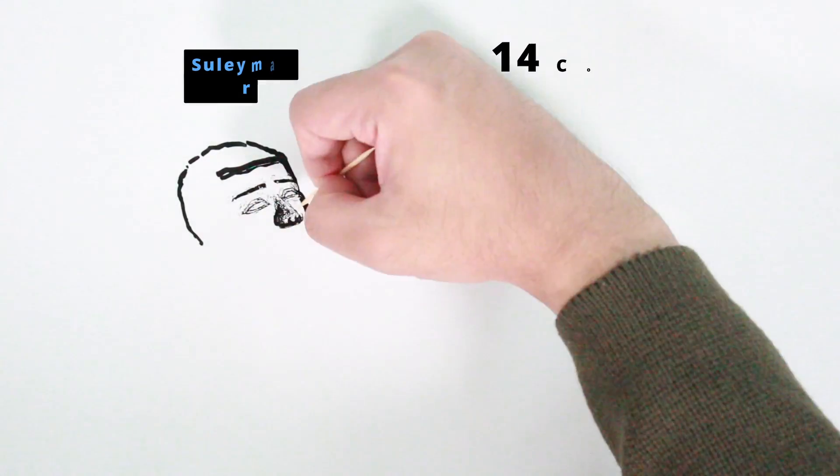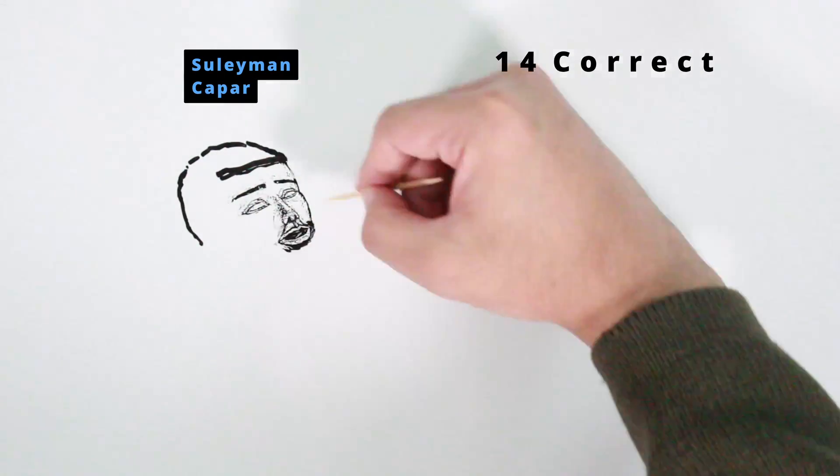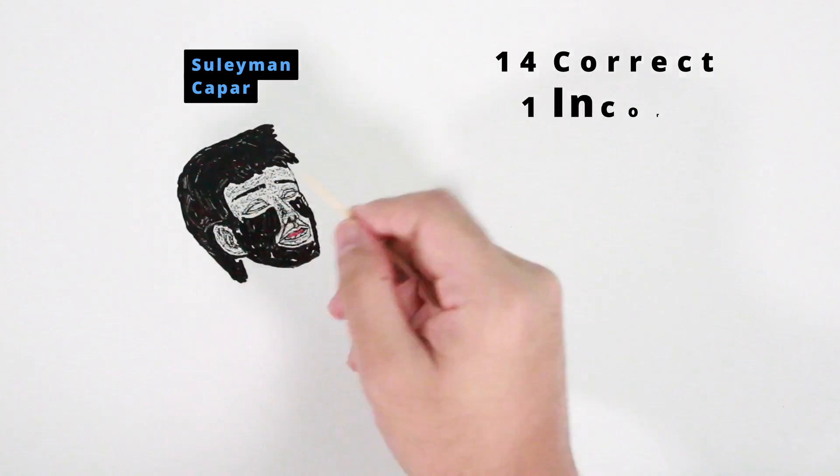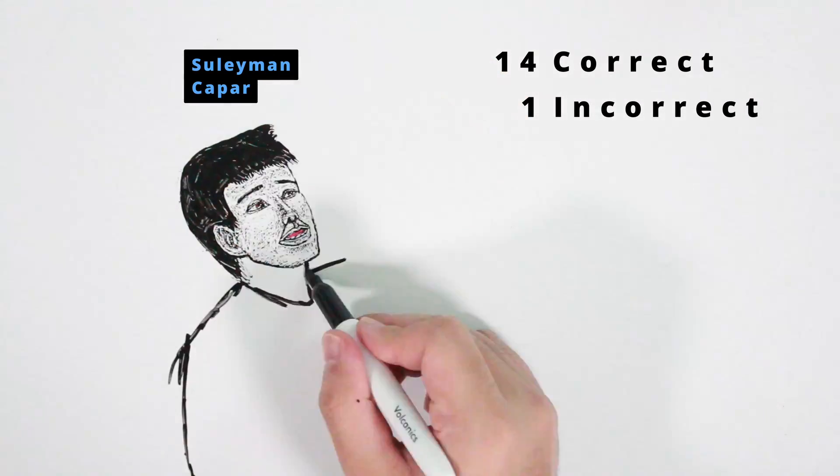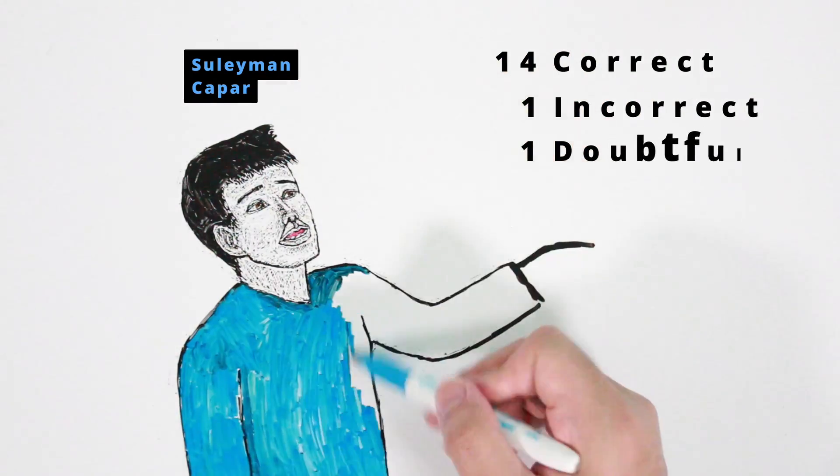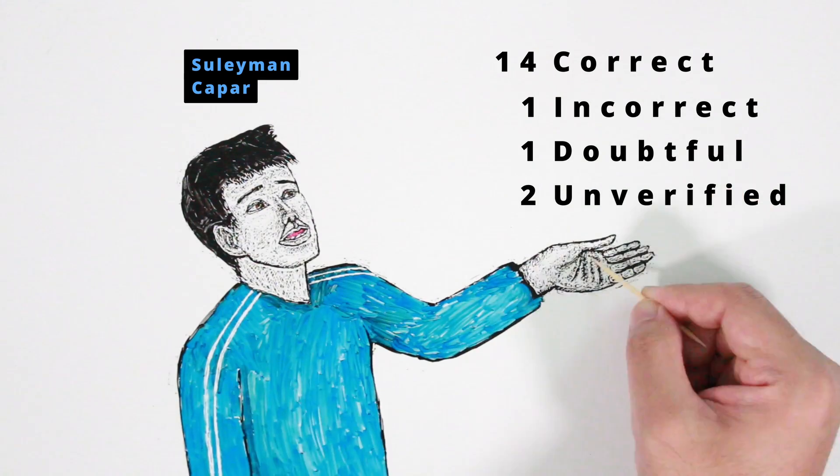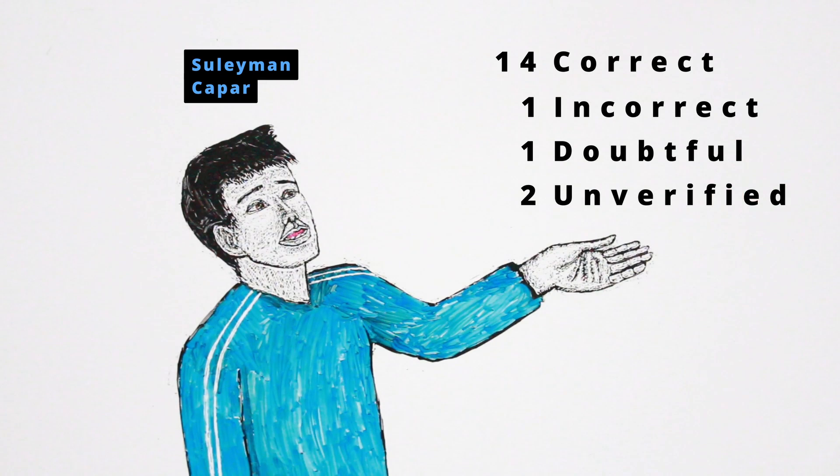Suleyman Chapar made 14 correct statements about the life and death of Mehmet Bekler. He made one incorrect statement about his past life, one doubtful statement about his past life, and two unverified statements about his past life.